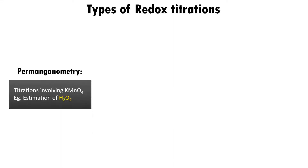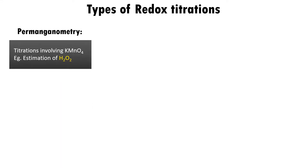Types of redox titrations: permanometry involves titrations with KMnO4. In direct titration, KMnO4 will be present in the burette and it is mainly used for the estimation of hydrogen peroxide. There are many other compounds also for which the method can be utilized. Only a few examples under each type are covered here.